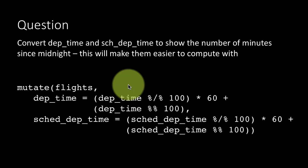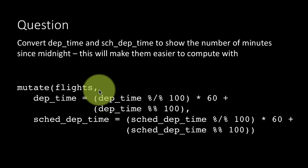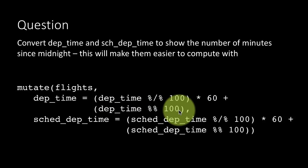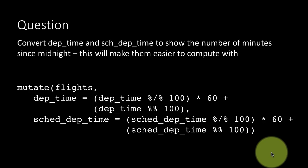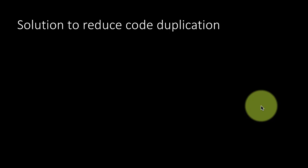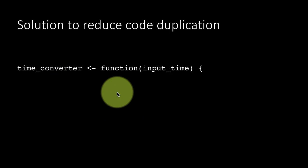So here, wouldn't it be nice if we had something that could take in a time and convert it into the number of minutes since midnight? Then we could just use that thing here and you could reuse the same thing here. It's just like what we do in Excel. We have so many functions and we keep reusing them. We don't write things again and again exactly the same thing. In programming, these things are called functions, and here we are showing you a function to do this operation.